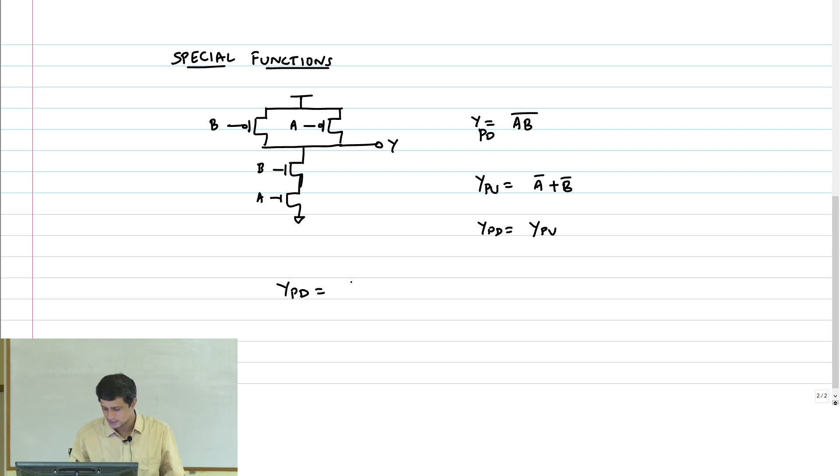What is the pull-up? A bar plus B bar. Clearly Y_PD equals Y pull-up, right? This has to be consistent. In general, if I have a pull-down network and a pull-up network, then I can say that my Y pull-down is some f bar of A1, A2, ... An. F bar because it is going to ground, I have to invert that function. These are active high switches. The switches turn on when the input goes high.